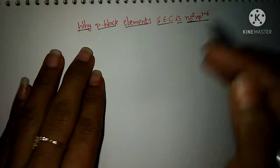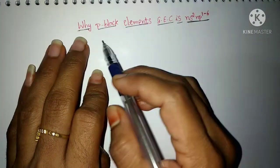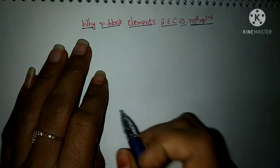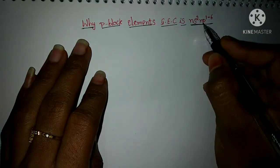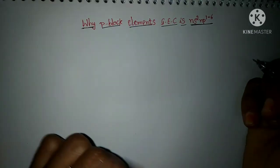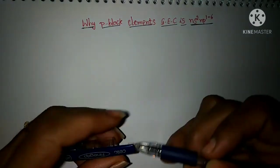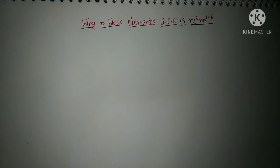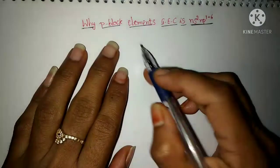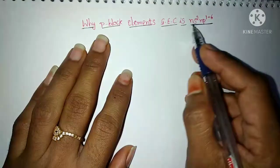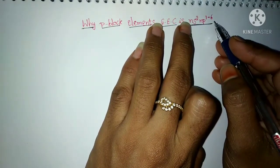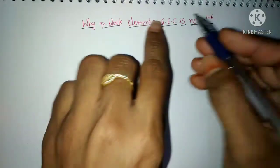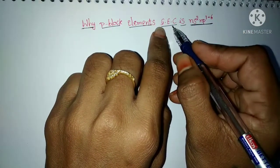Hi students, this is your Chamsimam. In this video we are going to discuss why P block element general electronic configuration is NS2 NP1 to 6. General electronic configuration is nothing but it is suitable to all the elements which are present in the P block.